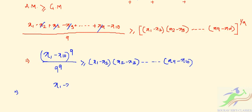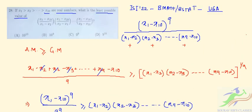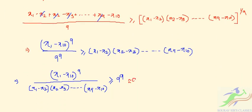So it is x1 minus x10 to the power 9 divided by x1 minus x2, x2 minus x3 up to x9 minus x10. So it should be greater than 9 to the power 9. So the least possible value will be greater than 9 to the power 9. So the least possible value will always be equal to this 9 to the power 9.